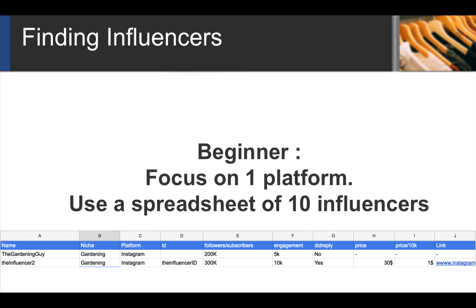When you're on your journey to find influencers and you're a beginner, focus on only one platform — don't use many. Use a spreadsheet to track your work clearly, with columns for name, niche, platform, ID, number of subscribers, engagement, and whether they replied. List 10 influencers. I use gardening as an example because many beginners think niches they don't know don't make money, but gardening is the hobby where people spend the most money — more than surfing, jet skiing, or poker.